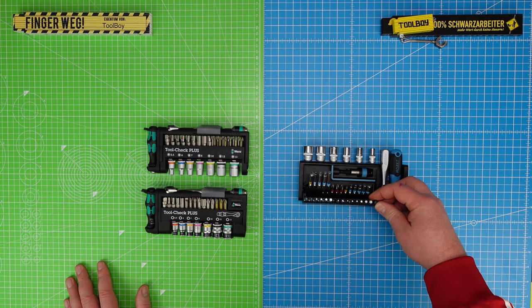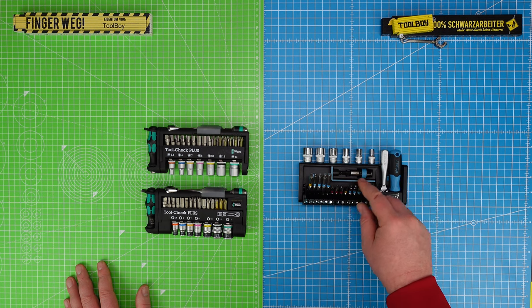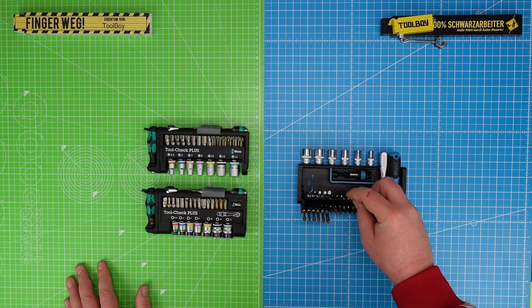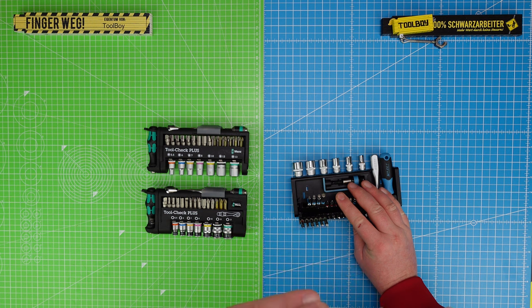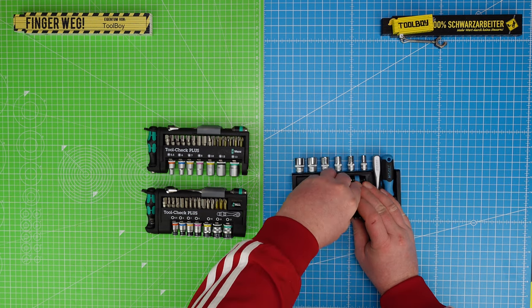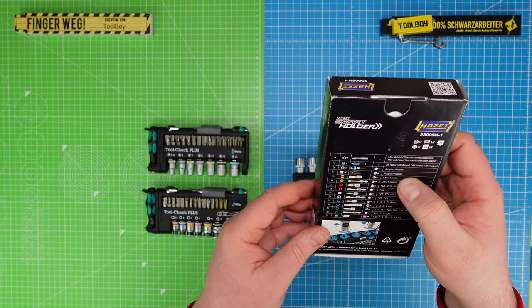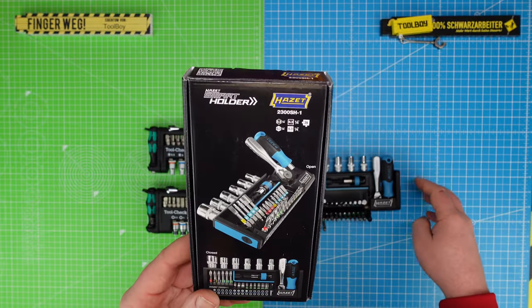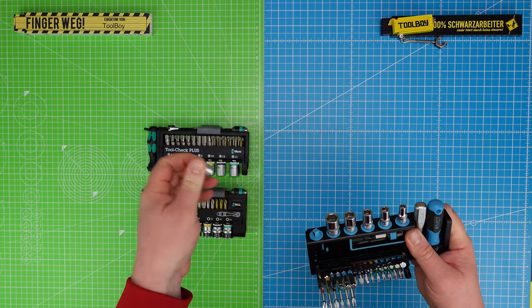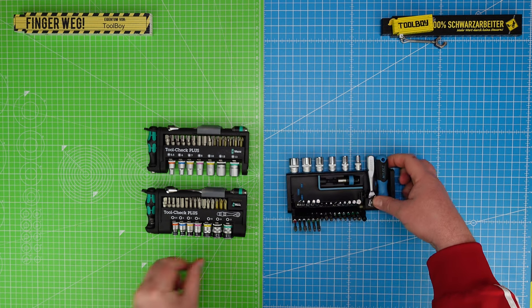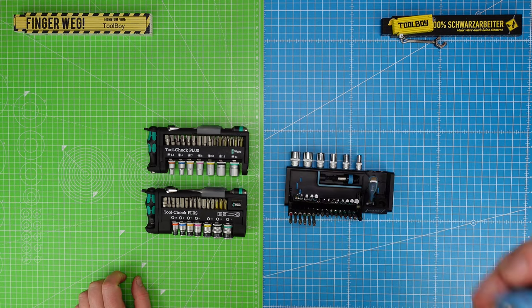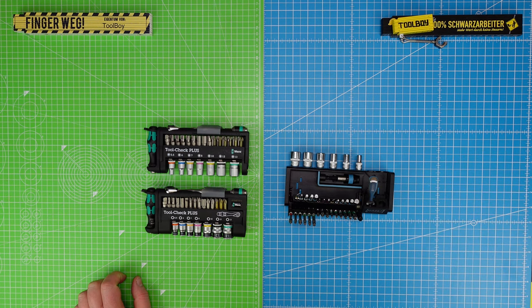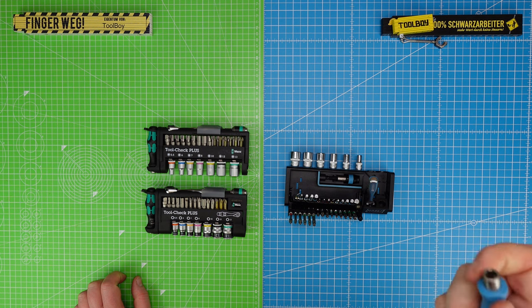Phillips is included, there's a 5.5mm slotted bit, also a 6 x 1mm. The small one is 0.6 x 4.5mm, the short one is 0.8 x 5.5mm. You can see all the bits and nuts included here. You can also easily remove them with this locking system where you turn and it opens. That's cool, the Wera doesn't have that. The grip handle also has a magnet holder, same as the Kraftform, magnetic with anti-roll protection.